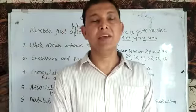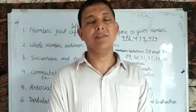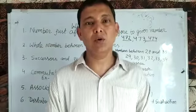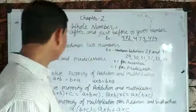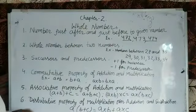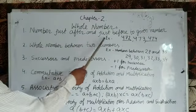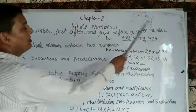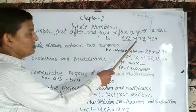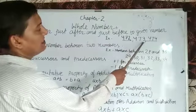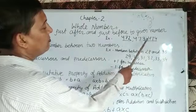Namaskar to all, welcome. In this video we will revise chapter number two, whole numbers. The first concept is numbers just after and just before a given number. For example, just after 473 is 474, and just before is 472.